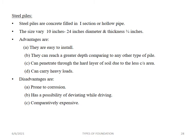Steel piles are concrete-filled I-sections or hollow pipes. Size varies from 10 to 24 inches with thickness of 3/4 inches. Advantages of steel piles are that they are easy to install, reach greater depths compared to other piles, can penetrate hard layers of soil with a smaller cross-sectional area, and can carry heavy loads. Disadvantages are the chance of corrosion, the possibility of deviating from location while driving, and that they are comparatively expensive.